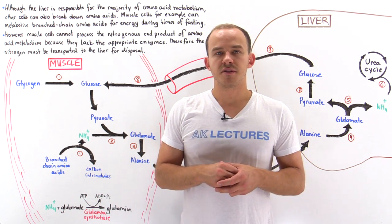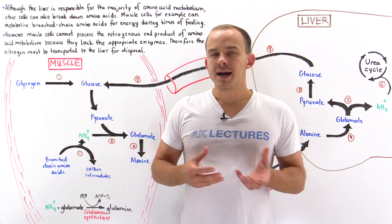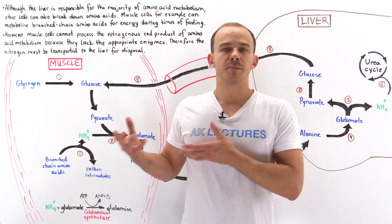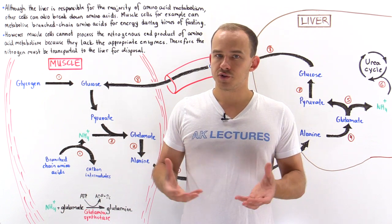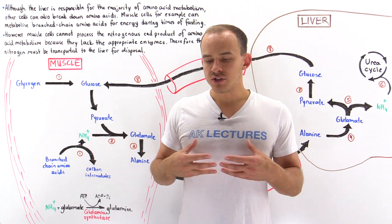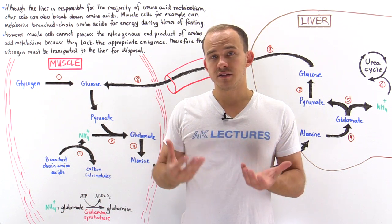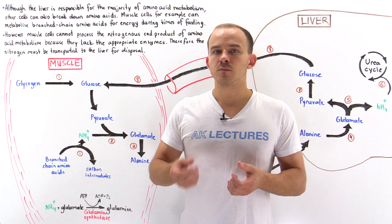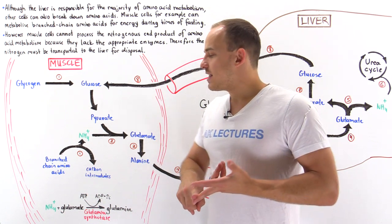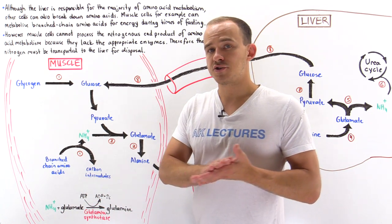Although our liver is responsible for the majority of the metabolism of amino acids that occurs inside our body, other organs and tissues can also break down amino acids and use the carbon skeleton byproducts for energy. One example of such a tissue is our muscle tissue — skeletal muscle can break down branched chain amino acids such as valine, isoleucine, and leucine, forming carbon skeleton intermediates used for energy.